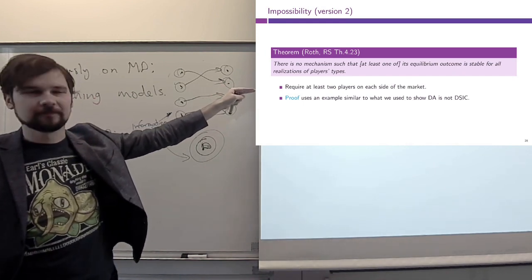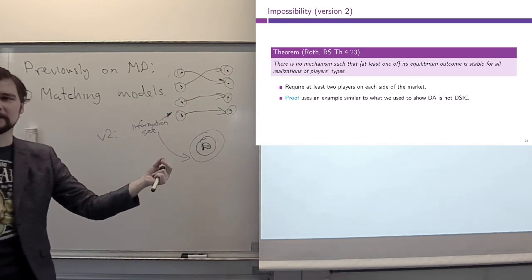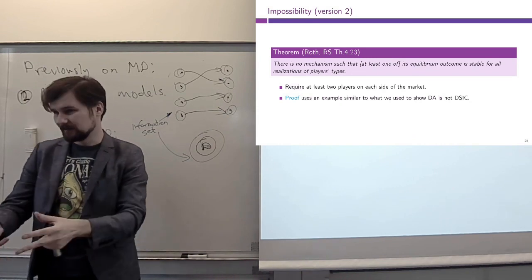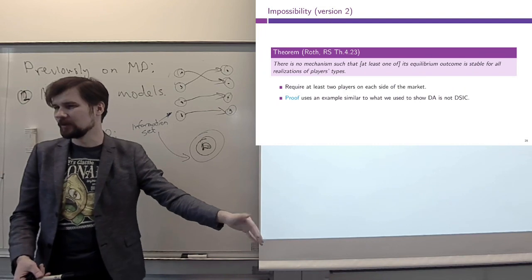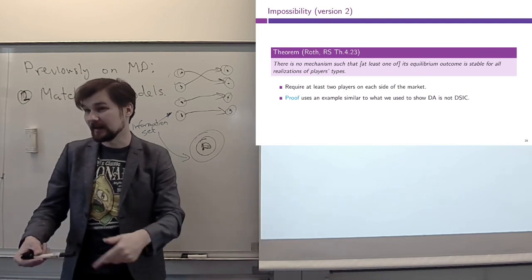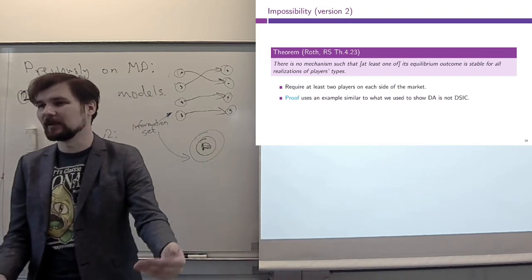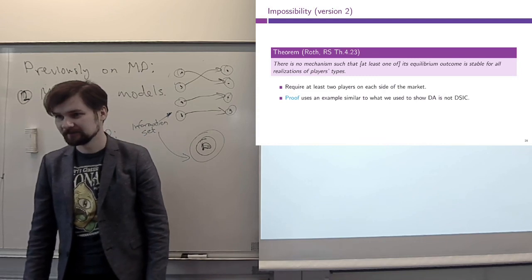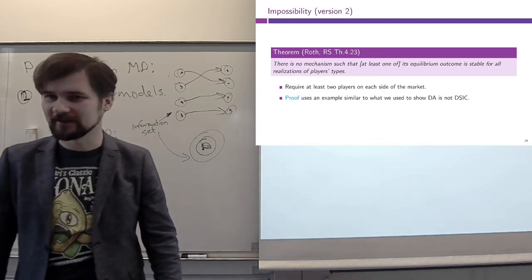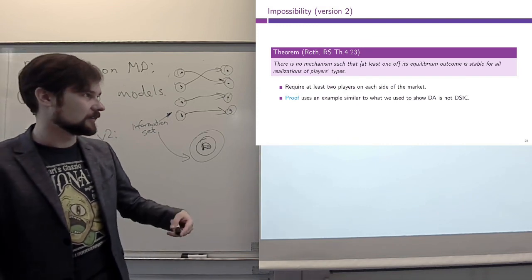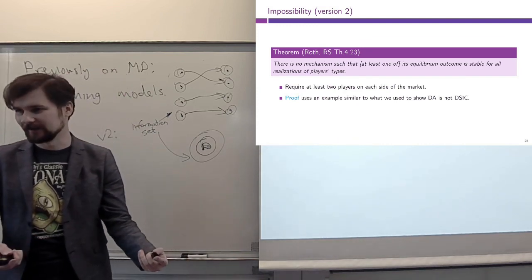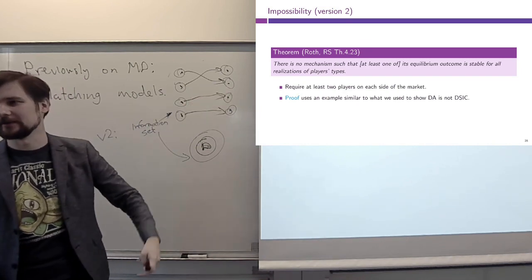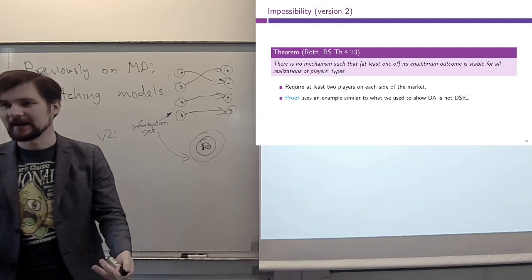There is a small technical assumption: we need at least two players on each side of the market, because otherwise the problem trivializes. If we have only one player, we can ask them to report their preferences and work with those; that one person becomes the dictator in a stable matching. You can see this as an analog of Arrow's theorem or Gibbard-Satterthwaite — dictatorship is the only incentive compatible mechanism, and once we rule that out, no mechanisms remain.